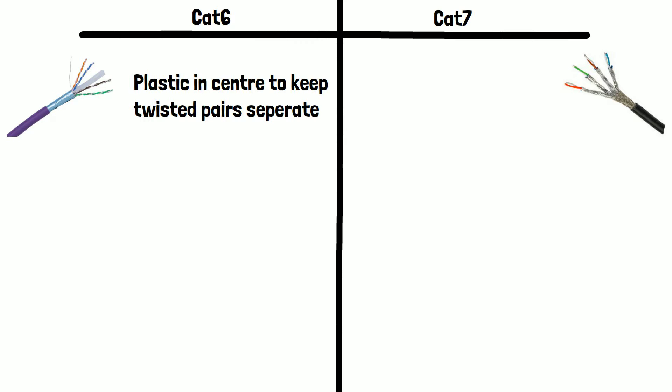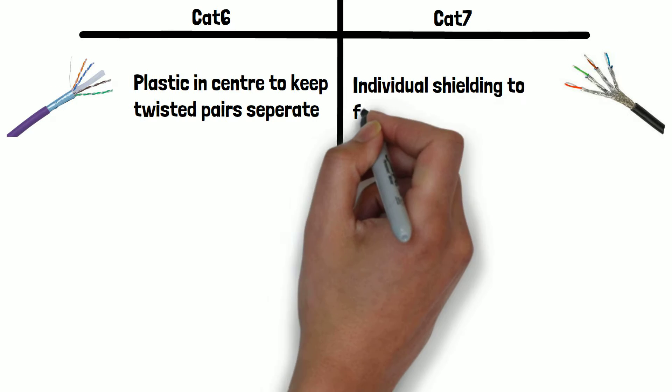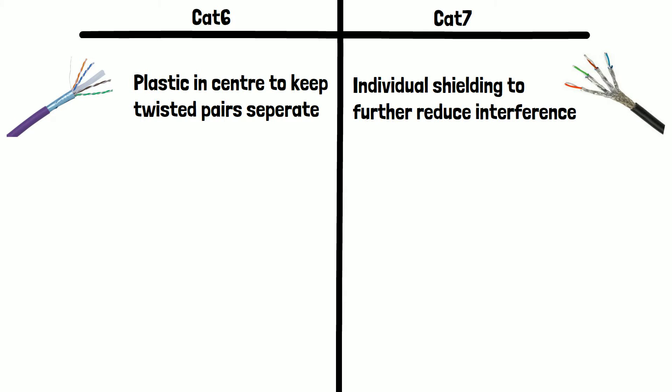CAT7 cables are similar in design, but CAT7 goes a step further than CAT6 and adds individual shielding to further reduce interference and support higher frequencies.